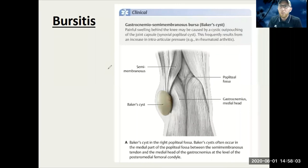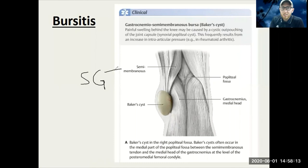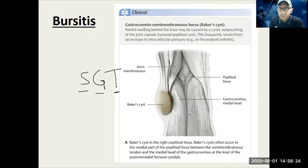One type of bursitis to point out is Baker's cyst, which is behind the pes anserine — remember that's the SGT muscles: sartorius, gracilis, and semi-tendinosus — coming down here, which can develop a cyst behind that area. Shin splints: you might have had them in the past. The anterior part of the tibia — feel that medial anterior part of the tibia — that is where most often shin splints occur.